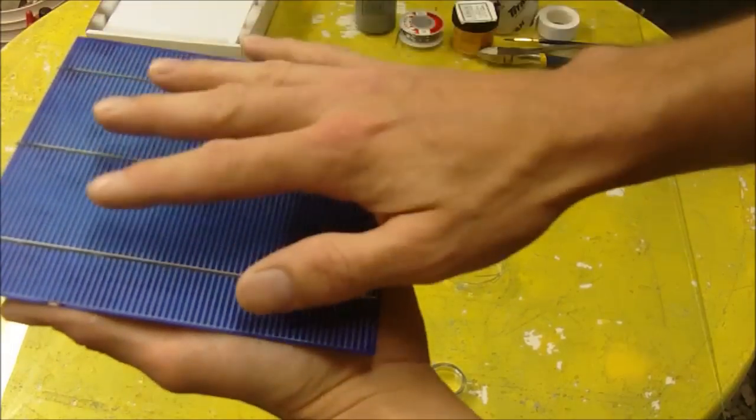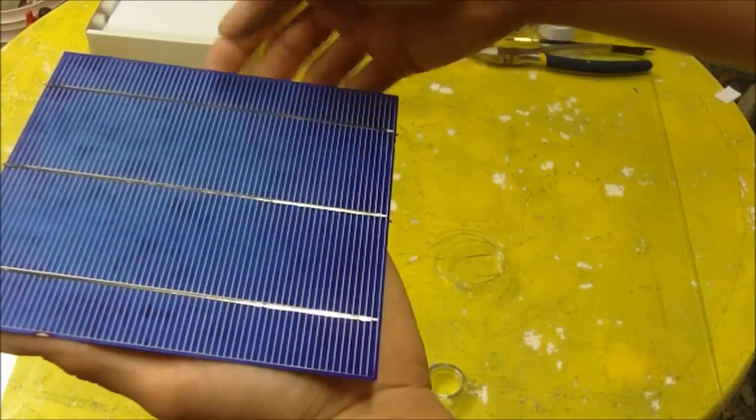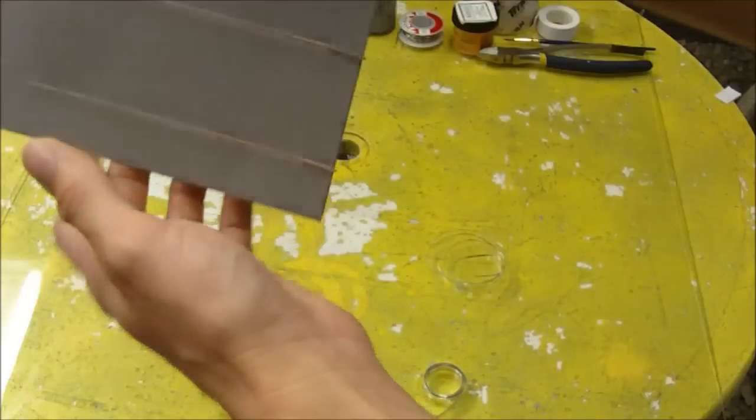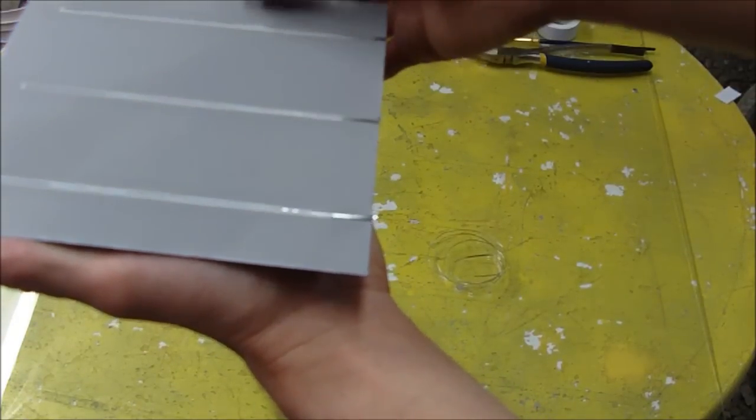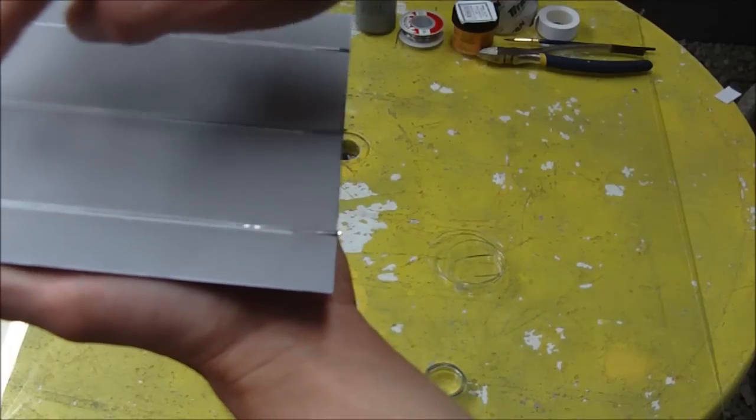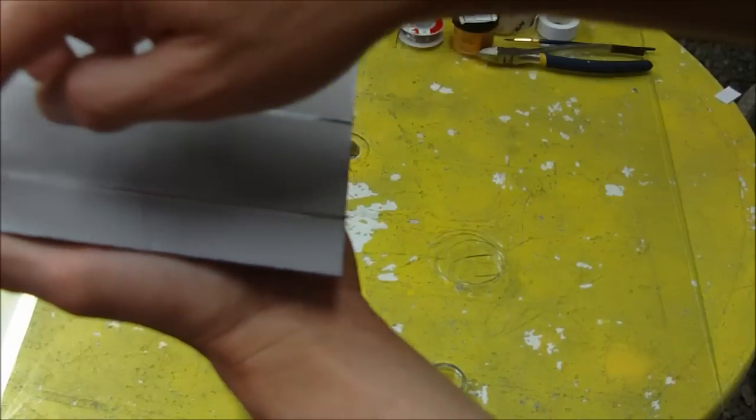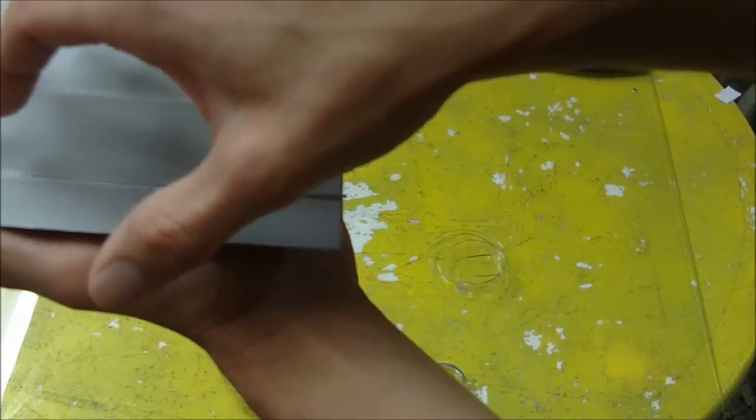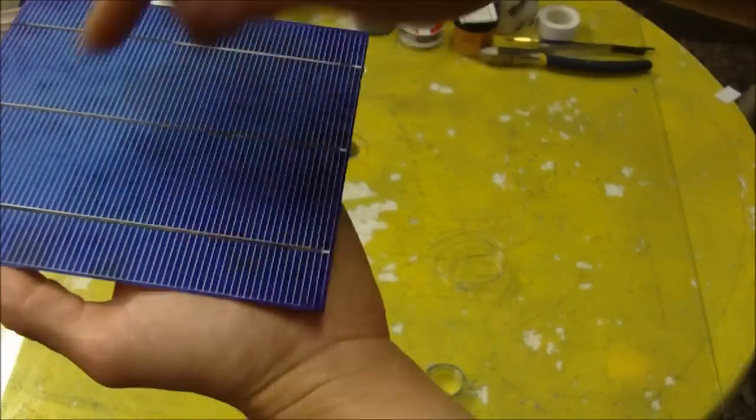This is the top side of the cell, called the sunny side, and this is the negative side. If you flip it over to the back side, this is the positive side of the cell. You can see there are these little strips of wire on here called the tabbing wires, and these wires connect each cell together. They have the same tabbing wires on the front and also on the back.